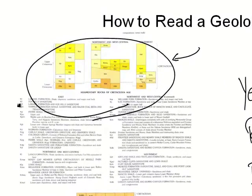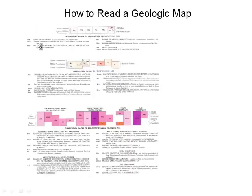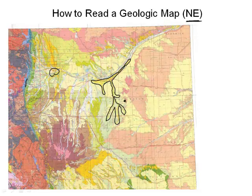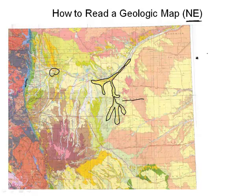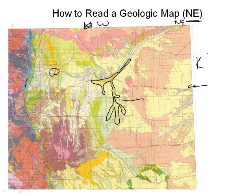That section we were just looking at was yellow, so it's a sedimentary rock — that's the key thing to understand. This rock, here in Washington County in Colorado, is a sedimentary rock. We are way out here on the edge: Kansas is right here, Wyoming is up here, Nebraska is up here. Generally speaking, we have sedimentary rocks out on the eastern plains.